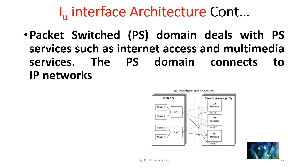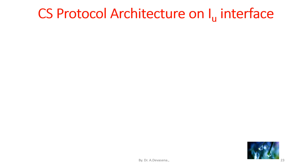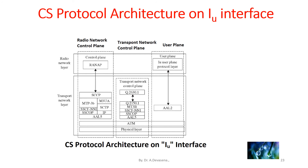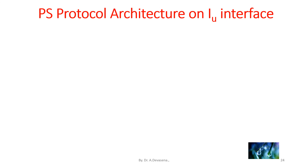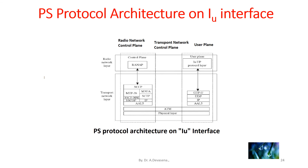The packet switched (PS) domain deals with PS services such as internet access and multimedia services, and connects to IP networks. The PS protocol architecture on the IU interface includes three different planes: radio network control plane, transport network control plane, and user plane. In further classes, we will discuss the PS protocol architecture as well as CS protocol architecture in detail.